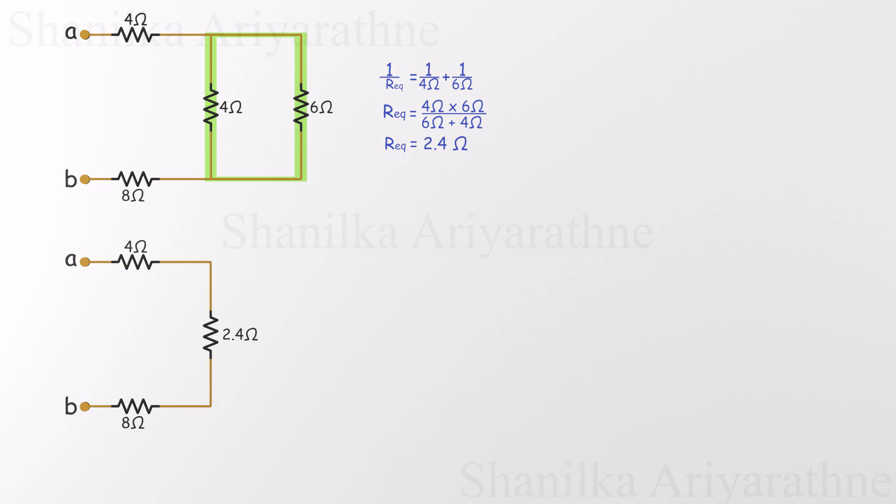Let's redraw the circuit again. Just one more step to go. Now our circuit is down to just three resistors, all connected in series: 4 ohms, 2.4 ohms, and 8 ohms. Since they're in series, we just add them up: 4 plus 2.4 plus 8 equals 14.4 ohms. And there it is. The total equivalent resistance between terminals A and B is 14.4 ohms.